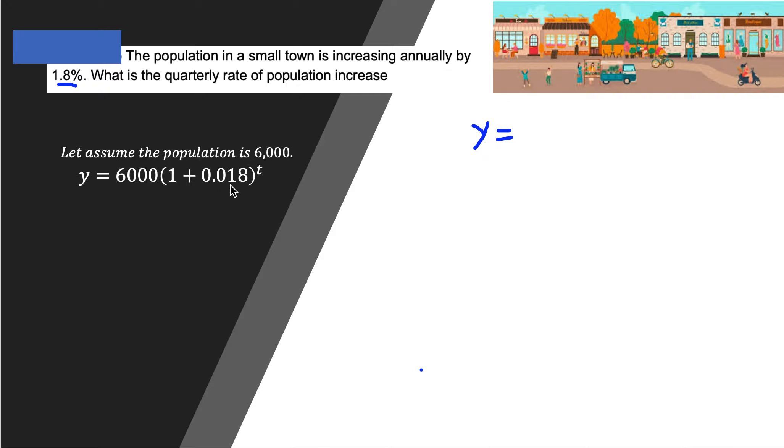The exponent is t yearly, but now we want to find quarterly. Every four months means quarterly, so in a year there are four quarters.